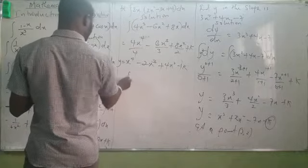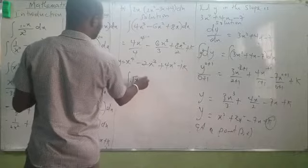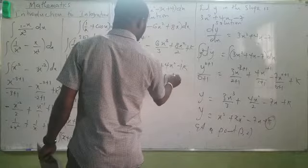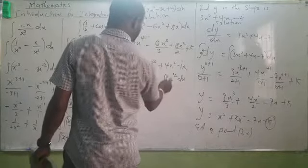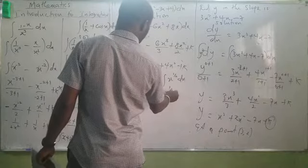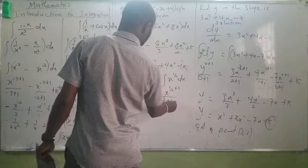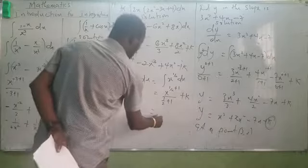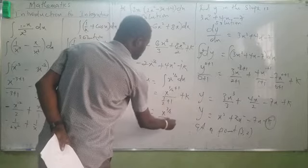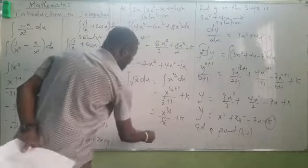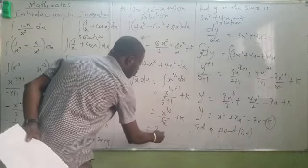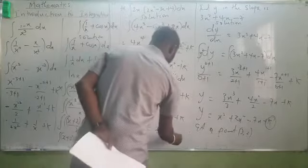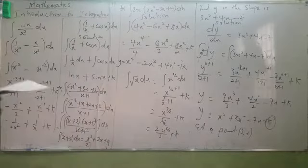Problem: evaluate the integral of √x dx. Rewrite √x as x^(1/2). Then apply the power rule: x^(1/2 + 1) / (1/2 + 1) + k = x^(3/2) / (3/2) + k. Simplifying gives 2x^(3/2) / 3 + k. That is the final answer.